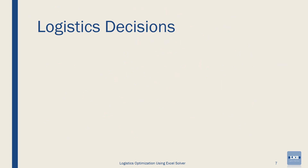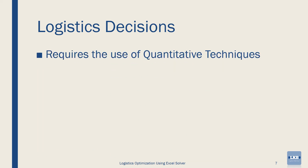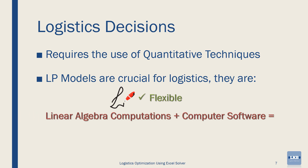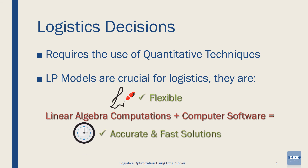These are just a few simple examples of the typical decisions that logistics professionals make every day, and they need to apply a wide range of quantitative techniques such as linear programming to support their decision-making process. Linear programming models are frequently used in logistics management because they are flexible enough to describe and model logistics problems efficiently. At the same time, they take advantage of linear algebra computations and the powerful speed of computer software such as Excel Solver, which we will be using in this course. The result is an accurate and incredibly fast solution to complex problems.